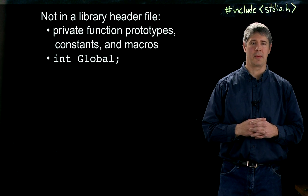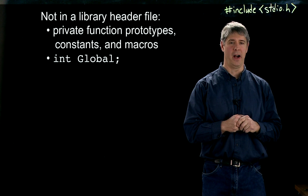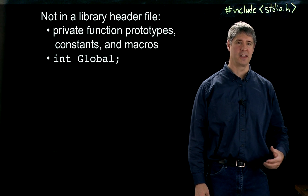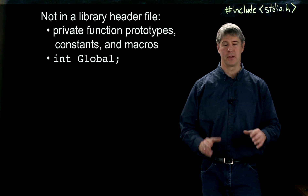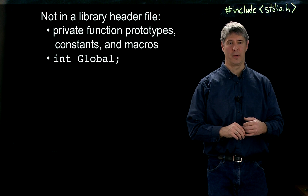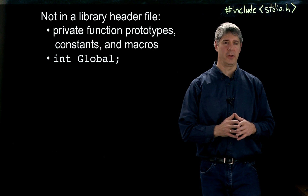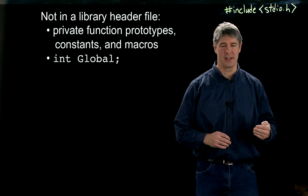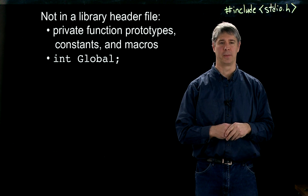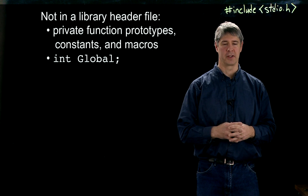To summarize, here are things you would not include in a library header file. You would not include private function prototypes, constants, or macros. If only one C file needs to use a particular function, constant, or macro, define it in the C file itself — don't put it in the header file, because you don't want to make them available to external programs. In our earlier example, that would be the cuber function.